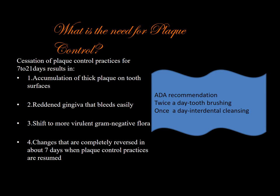What is the need for plaque control? Plaque is defined as a structured, resilient, yellowish-gray substance which gets attached to the intraoral hard tissue surfaces including removable and fixed prostheses. Any cessation of plaque control practices for at least 7 to 21 days results in accumulation of thick plaque on tooth surfaces, reddened gingiva that bleeds easily, and a shift to more virulent gram-negative flora — changes that are completely reversed in about 7 days when plaque control is resumed. There is a need for both professional and home care oral hygiene aids. The ADA has recommended tooth brushing twice a day and interproximal cleansing once a day.